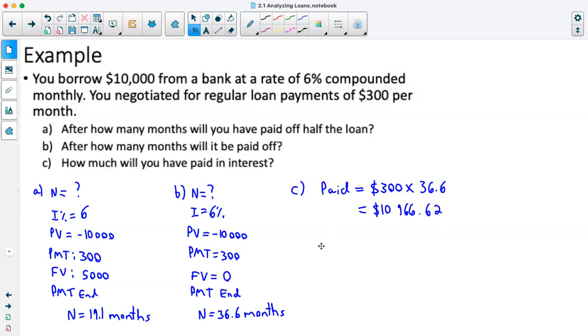Now to figure out our interest that we ended up paying, what we'll simply do is take the amount we paid and subtract how much the loan was worth. So we've got $10,966.62 minus $10,000, and that'll give us $966.62 of what was paid back was in interest.